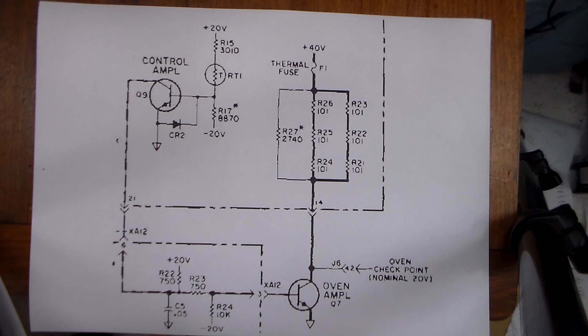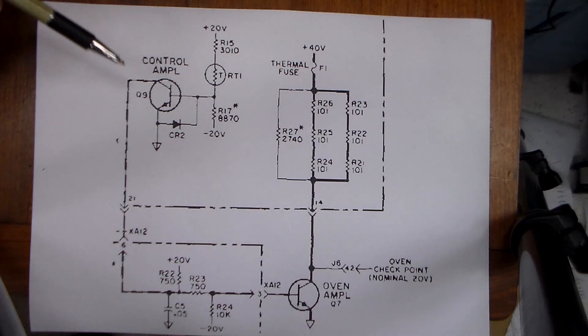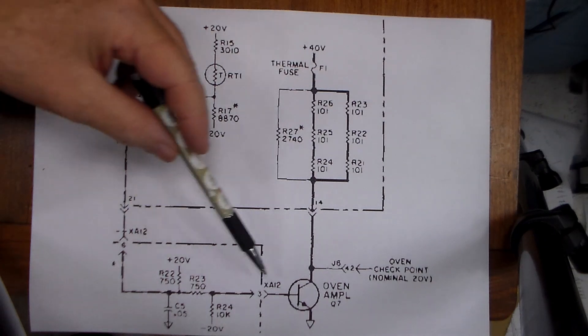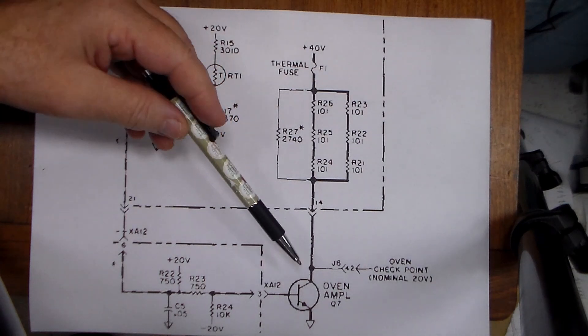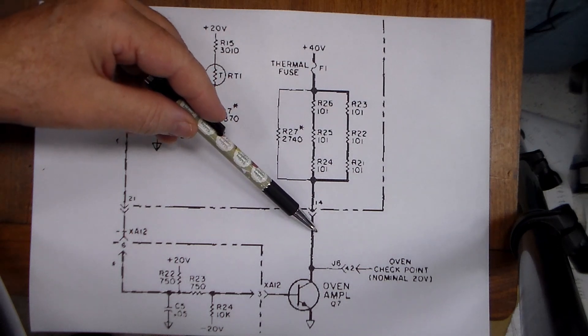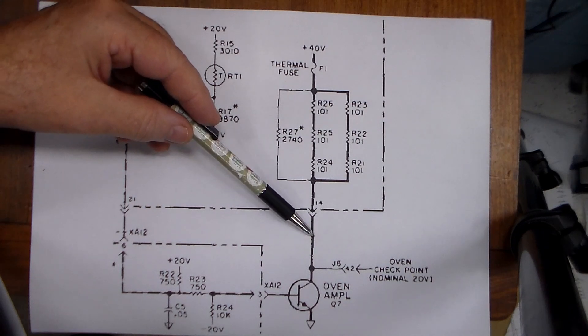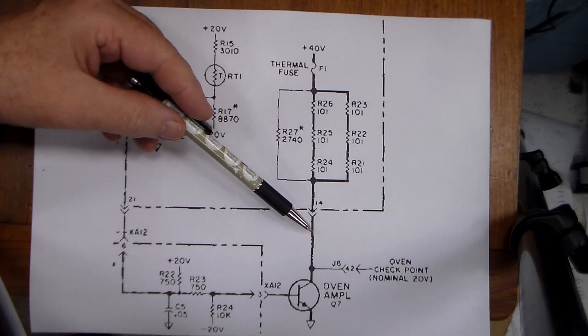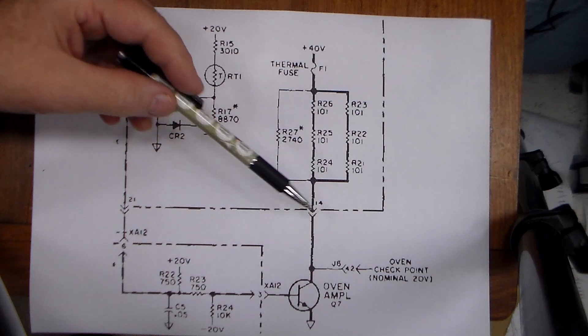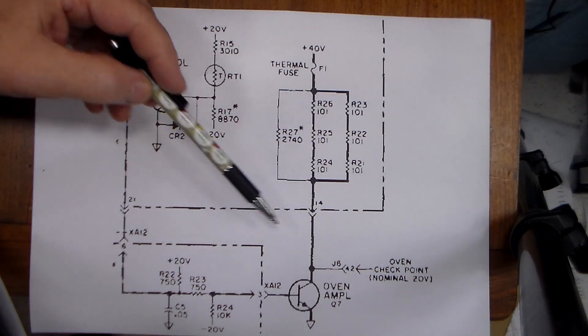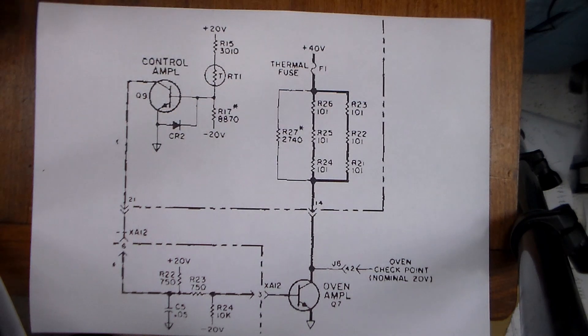Rather than just being fully on and this point here being close to 0 volts or fully off and it's close to 40 volts, it then operates linearly within this very small range of temperatures, so you actually have not full power and not 0 power being applied to the load here.